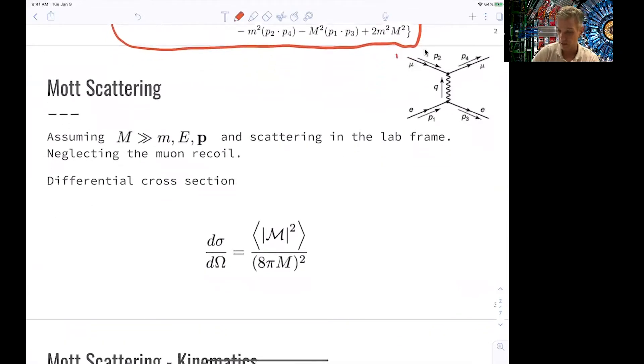So here, again, we are at this example of a spin-half particle scattering with a different spin-half particle through the exchange of a photon. So we used the example of an electron-muon scattering. But this muon here could also be a proton or any other nuclei.